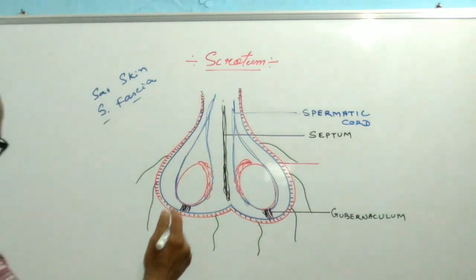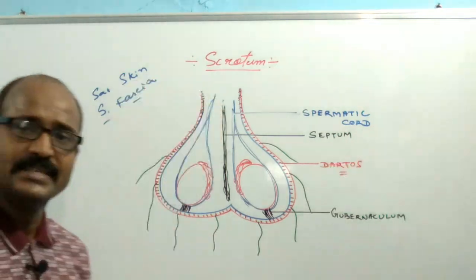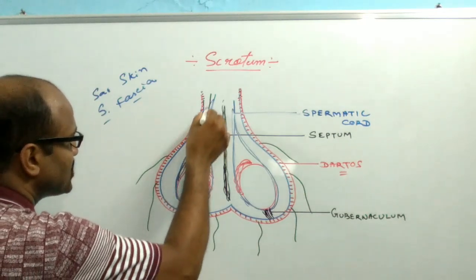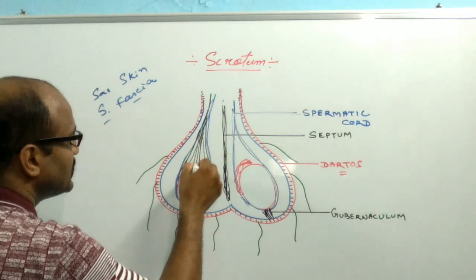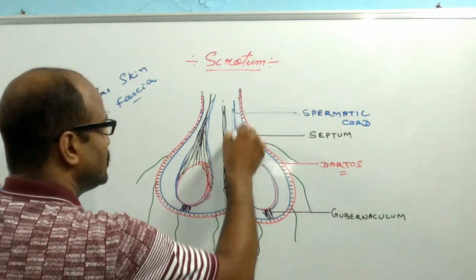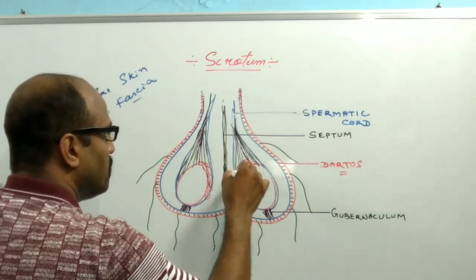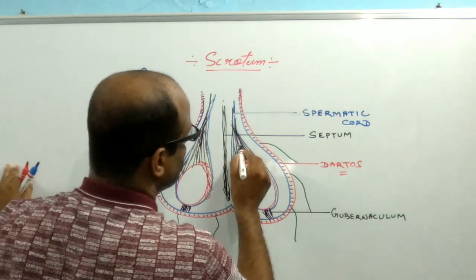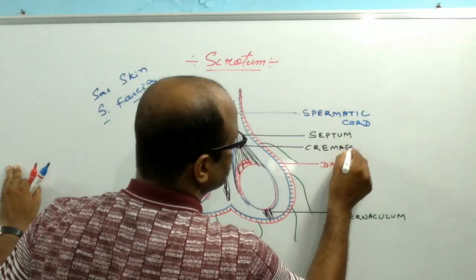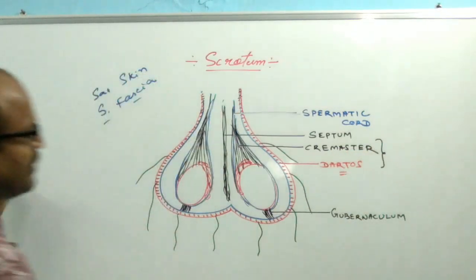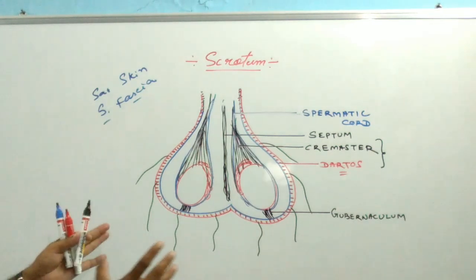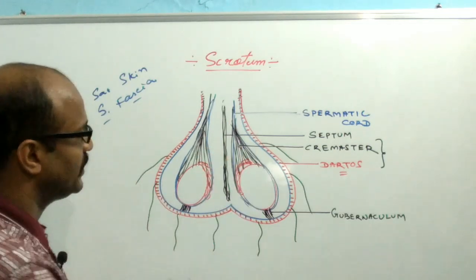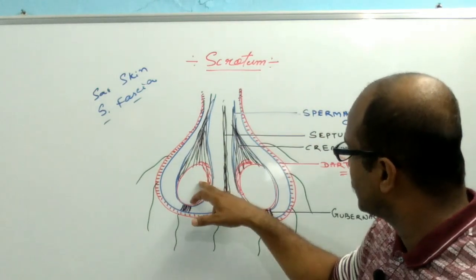The first is smooth muscle in the wall of the superficial layer of the scrotum, which helps cause wrinkling of the skin. This smooth muscle is known as the dartos muscle. The second is skeletal muscle that obliquely extends from the trunk, known as the cremaster muscle. By means of the cremaster and the dartos muscles, the up and down movement of the scrotum takes place, helping regulate the temperature inside the scrotum.